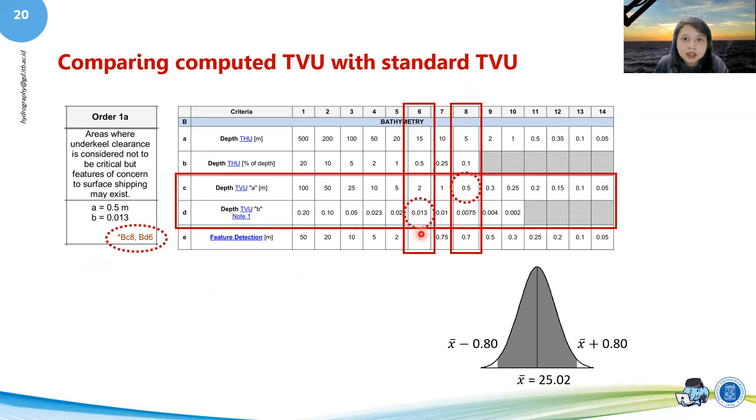You compute it into your TVU equation, and that is actually your x̄ which is 25.67. Sorry for this, this should be 25.67, I'll revise it when I give it to you. Afterwards you will have your TVU as 0.60.